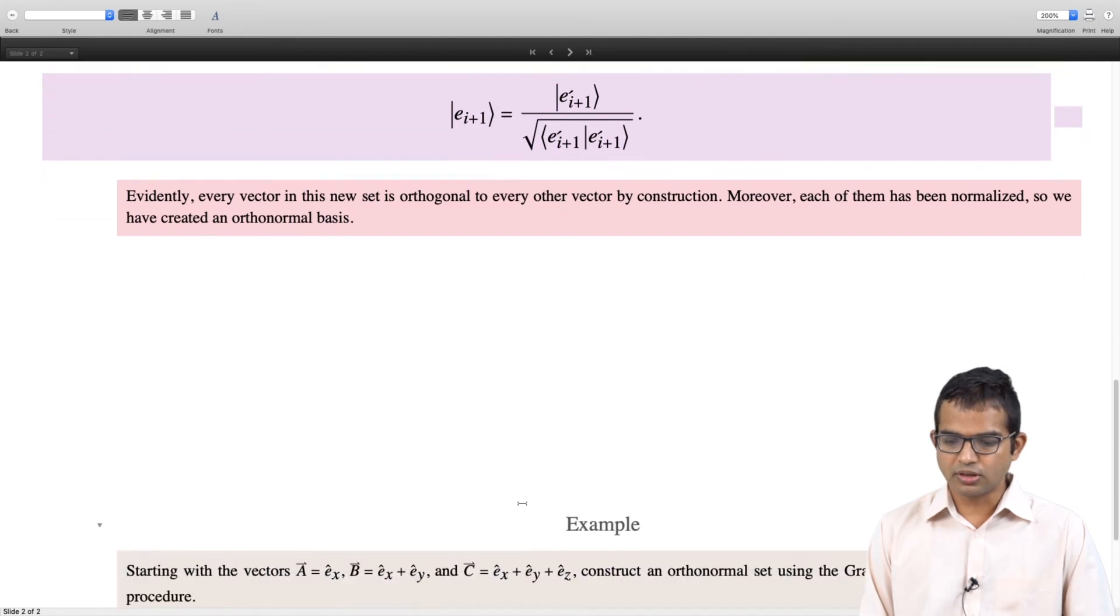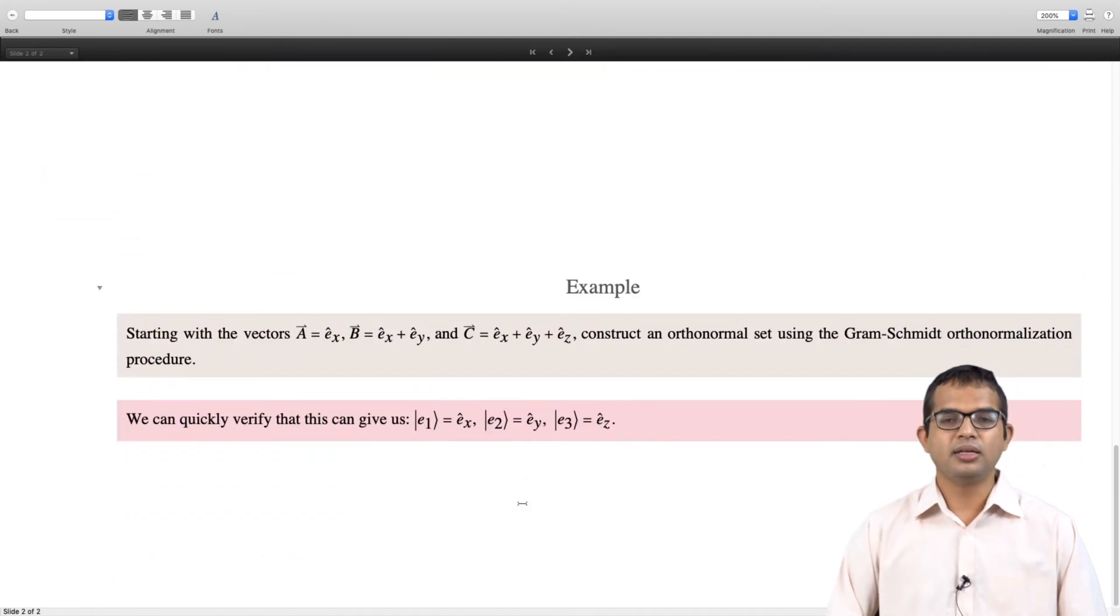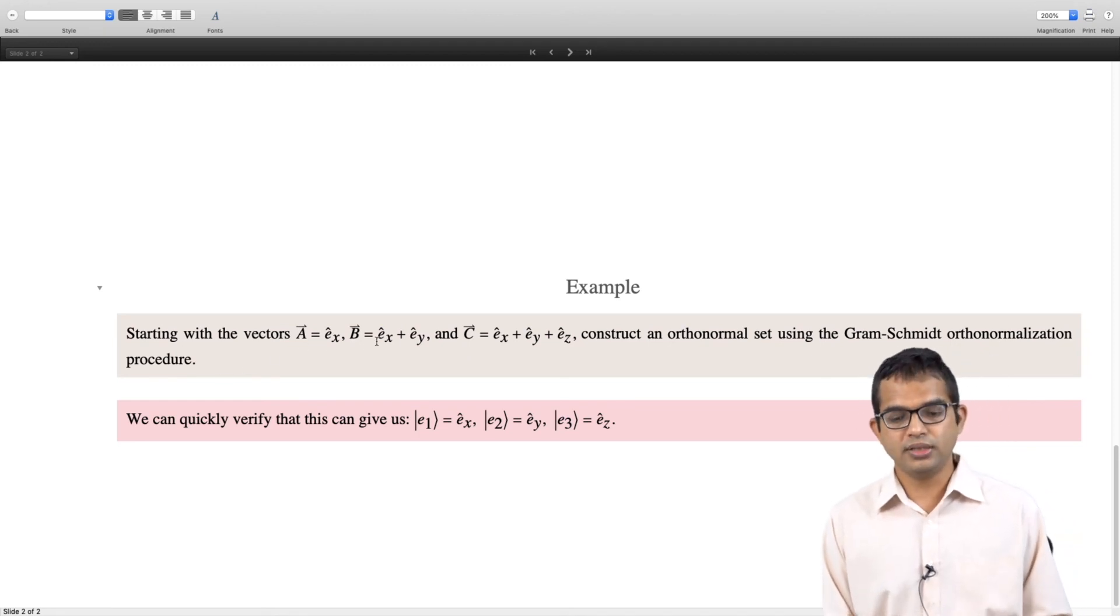To convince yourself that this works, I have given you an example. You might not need an elaborate method for this, but let us say you start with the vectors EX, EX plus EY, and EX plus EY plus EZ. I am thinking of a three-dimensional space with the usual kind of vectors. If you take the first vector to be A itself, it is already normalized, so E1 equals EX. When you create E2, you peel off the component of B along EX, which will turn out to be just EY. Then for the third vector C, peel off the vector along A and the vector along B, so you get EZ.